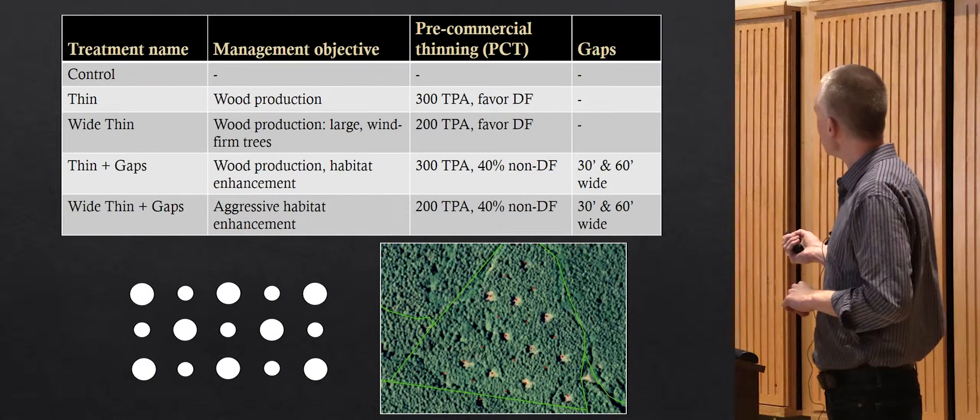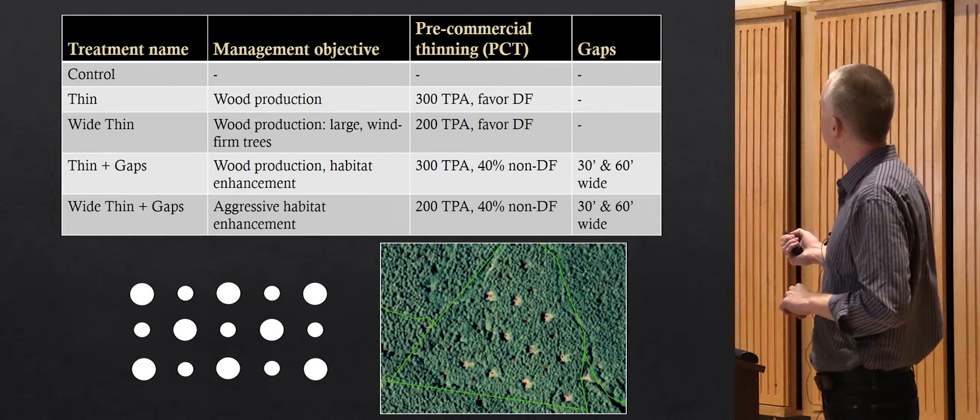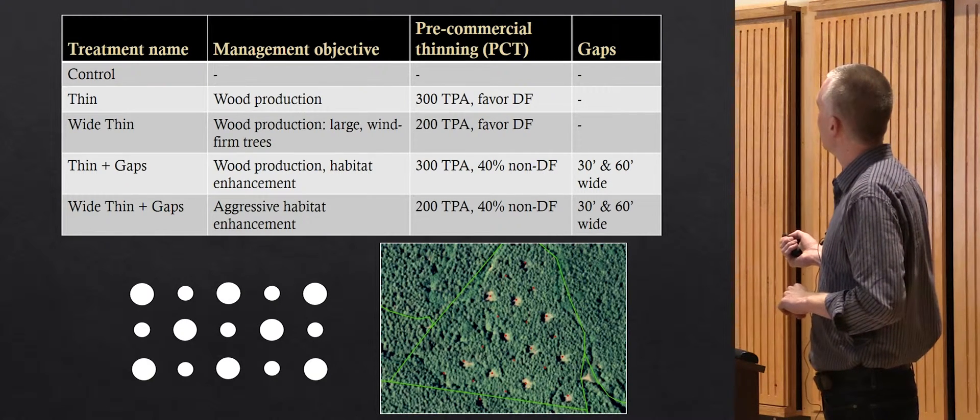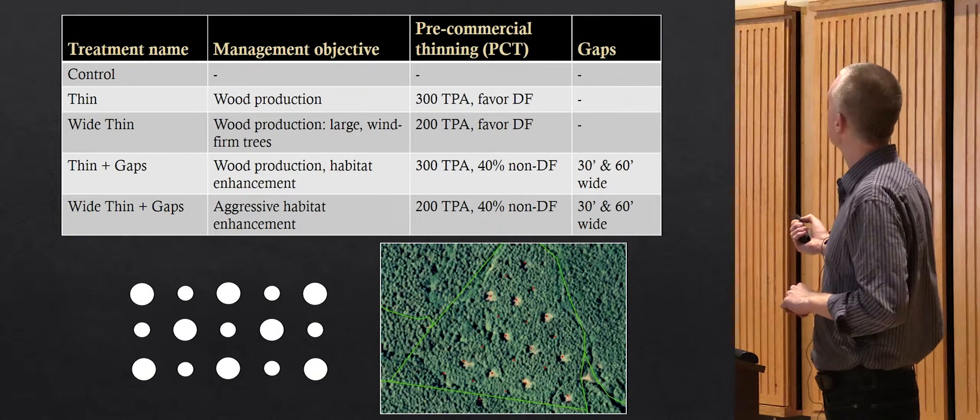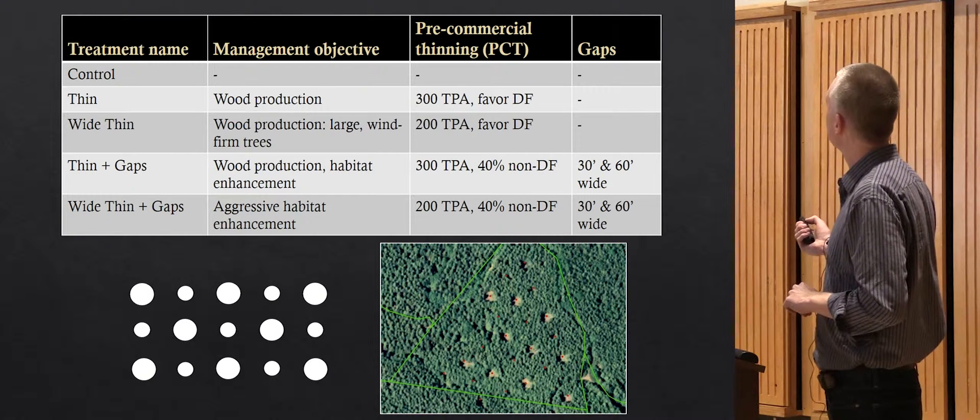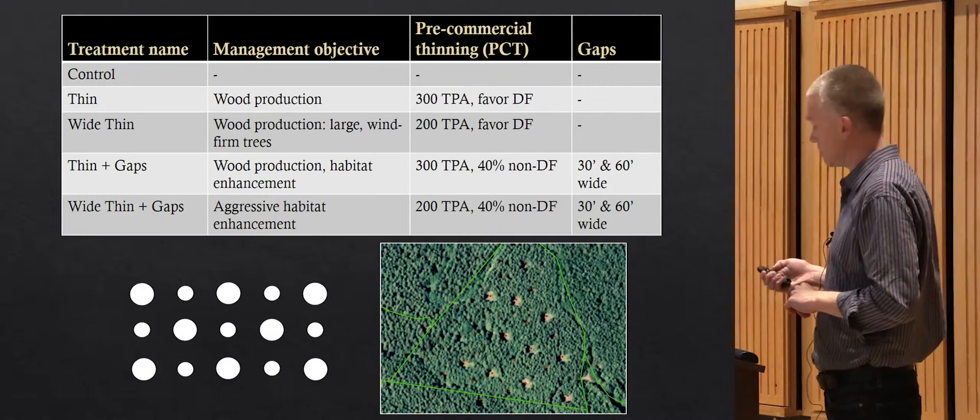Then my favorite term here, aggressive habitat enhancement. This is wide thinning down to 200 trees per acre, again looking for non-Doug fir and again putting these gaps in.